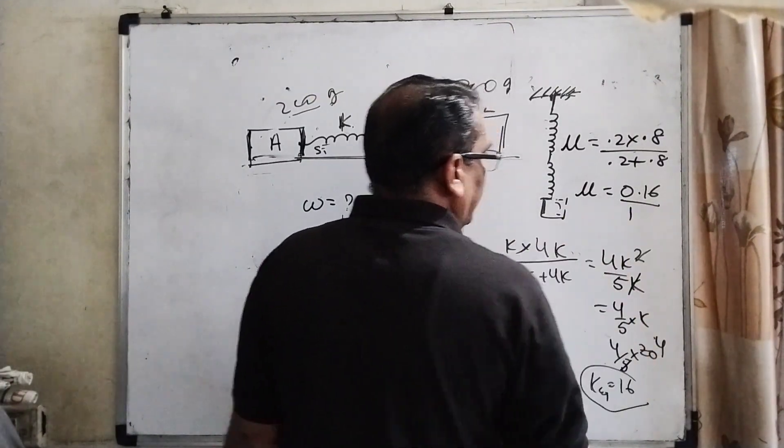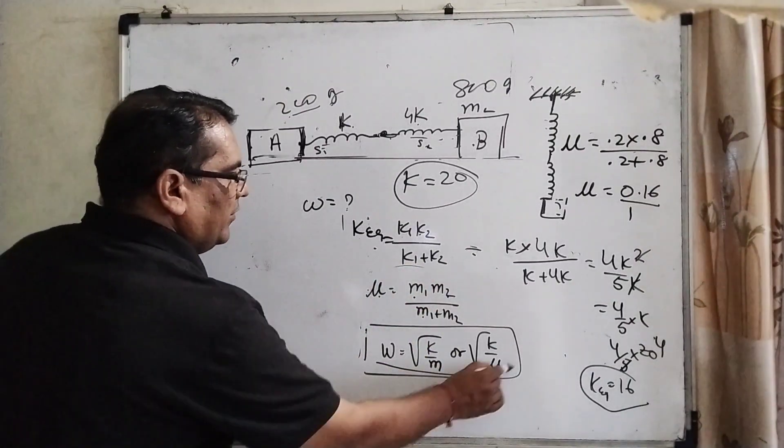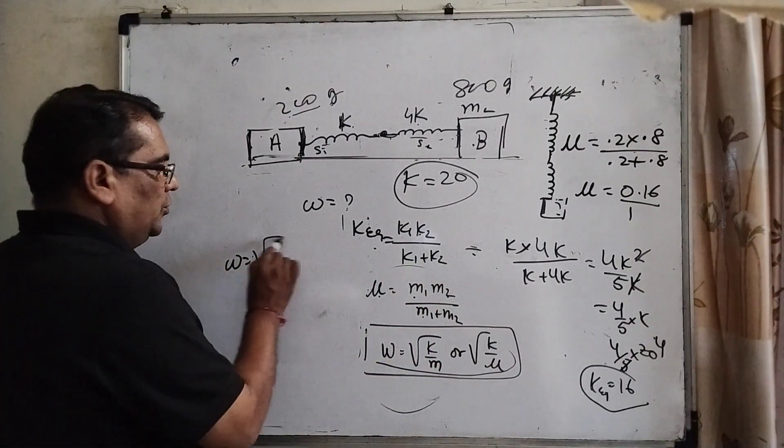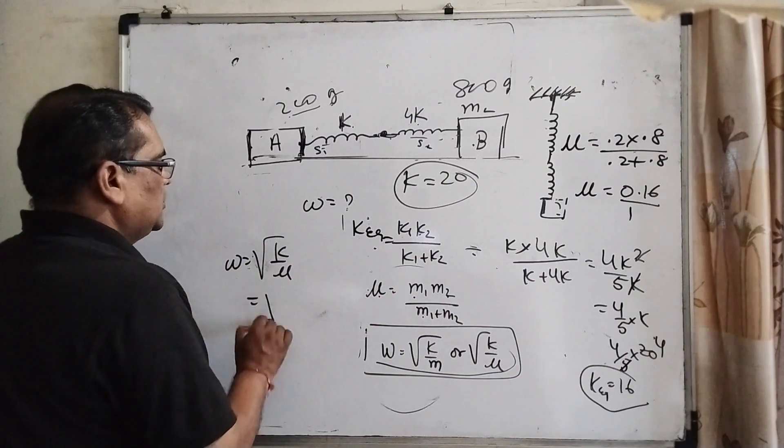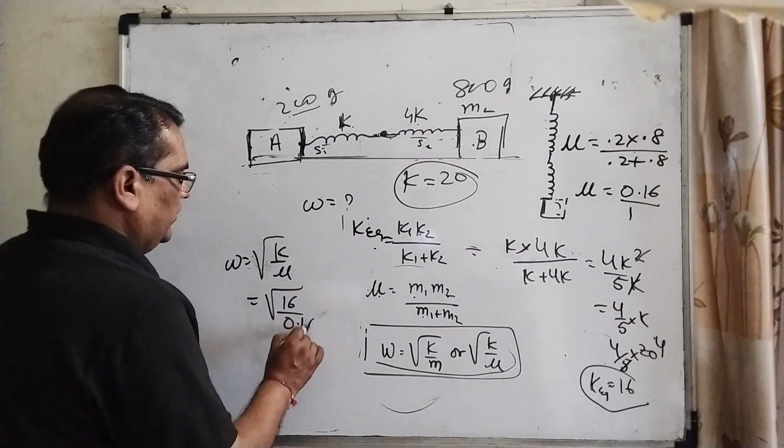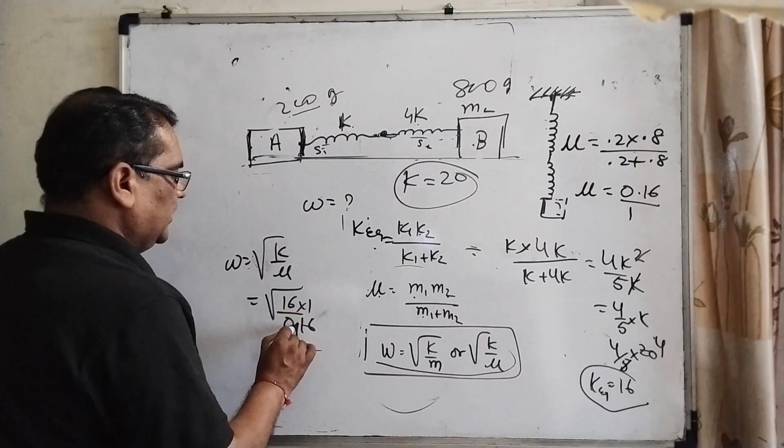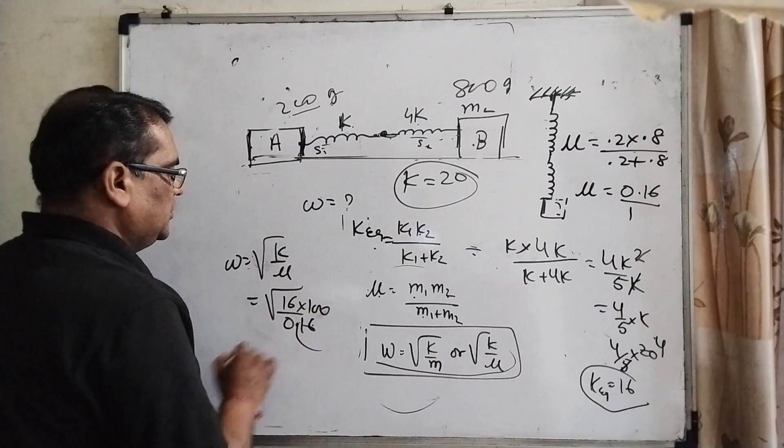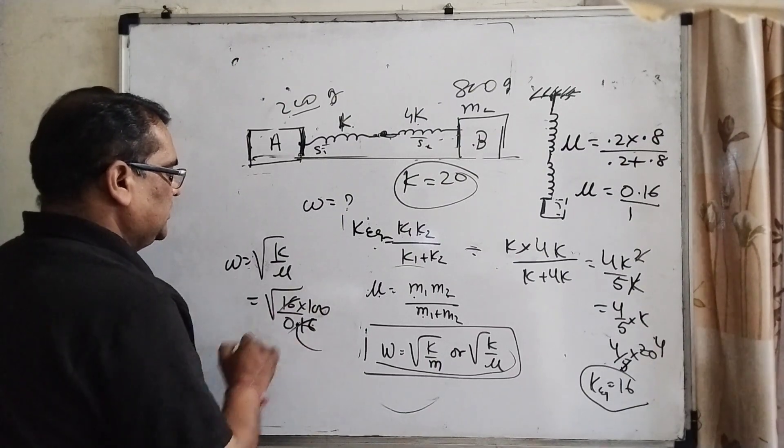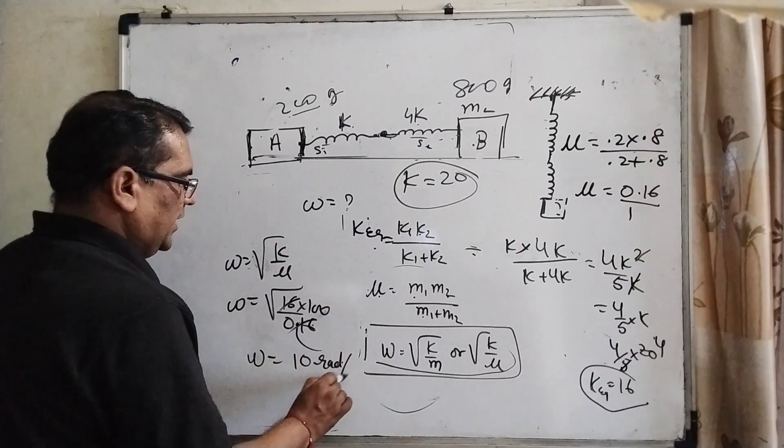Now substitute this value in our formula omega equals root k by mu. So here k is 16 and mu is 0.16. Remove the decimal using 100, and after the decimal is 2 digits. 16 upon 16 cancels out, then omega is 10 radian per second.